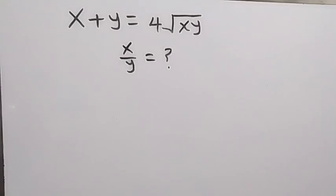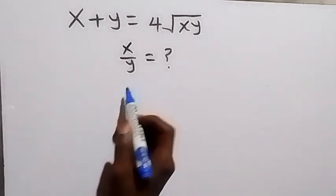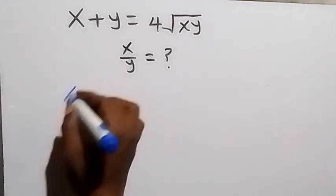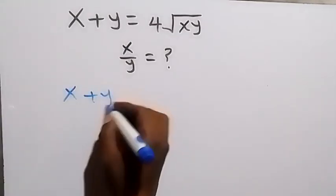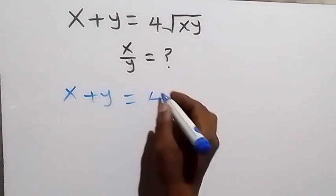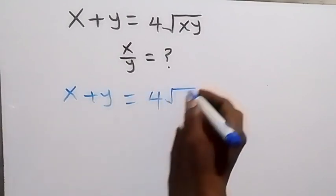Hello, you are welcome. How to find the value of x over y in this problem given that x plus y equals 4 root xy?